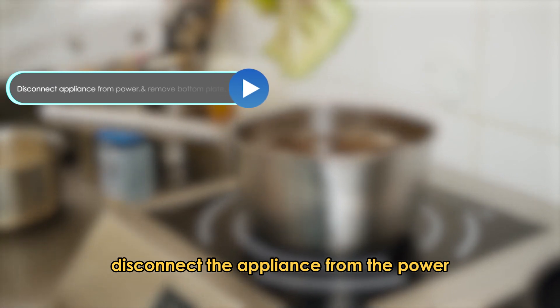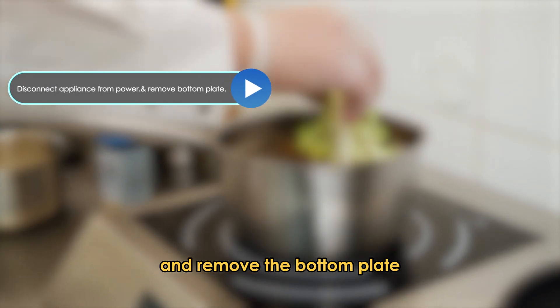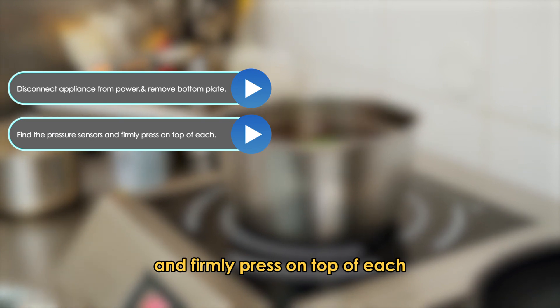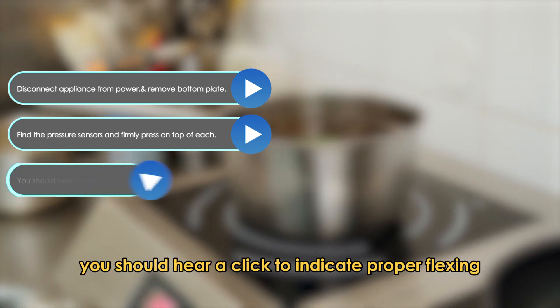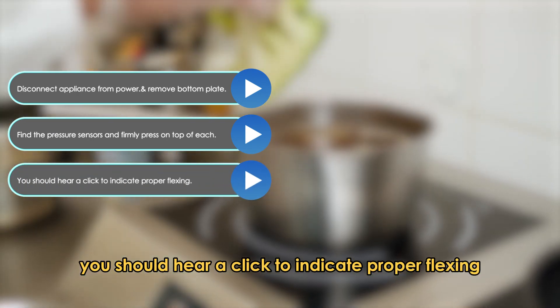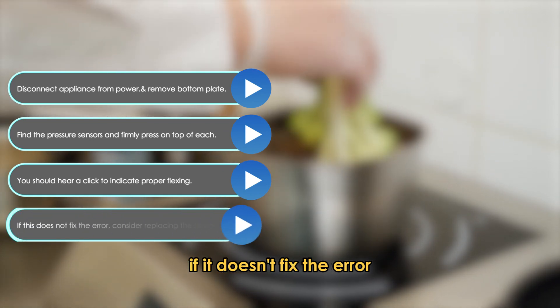Test the sensors. Disconnect the appliance from power and remove the bottom plate. Find the pressure sensors and firmly press on top of each. You should hear a click to indicate proper flexing. If it doesn't fix the error, consider replacing the sensors.